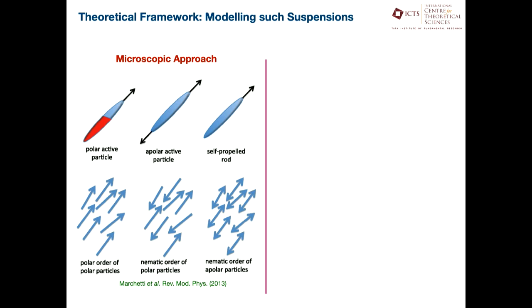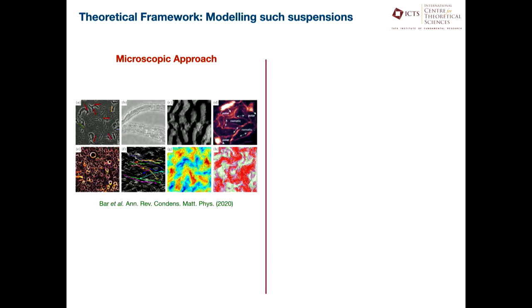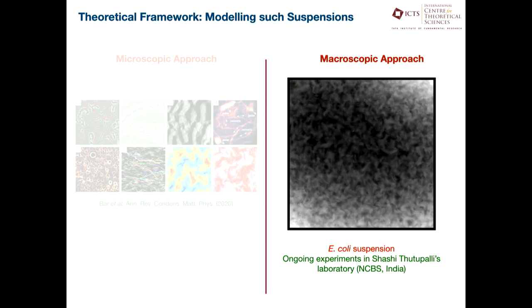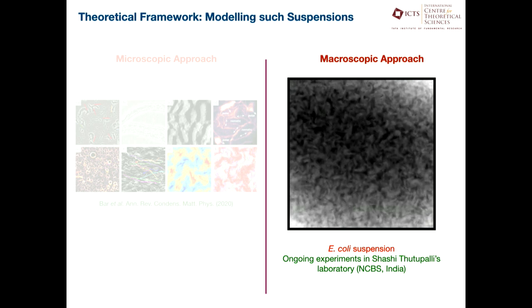You then start to be more sophisticated and think within that microscopic approach in terms of particles which have certain properties — rods which could be polar, which could be apolar, etc. This is from a recent review by Barr et al., and you see that this approach of taking care of individual agents and coarse-graining at that scale gives results which lead to a theory reasonably robust for a wide variety of problems. That's not the approach that will be in this talk — what I will be looking at is a more macroscopic approach.